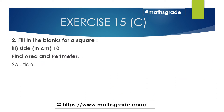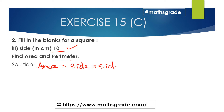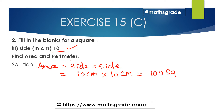Now question number three. The side of the square is given as 10 centimeters. Find the area and perimeter of the square. The formula for area of a square is side multiplied by side. So 10 cm × 10 cm = 100 square centimeters.